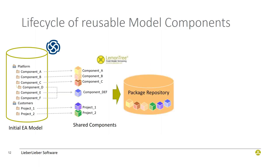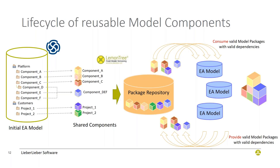The lifecycle of reusable model components is basically independent of the main model. On the left side you have the initial Enterprise Architect model from which we can extract various components, then store them in some sort of package repository — a version control system, file system, or other — offering flexibility here. You can then introduce these components into new models. Interestingly, the first time a customer wanted a reusable SysML library from me was about 15 years ago.